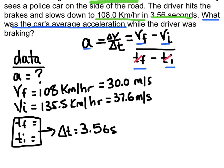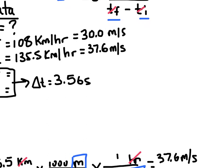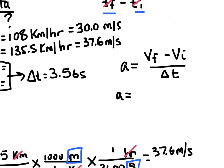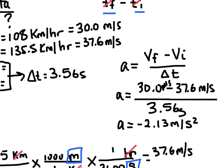Rewriting the equation: acceleration equals V-final minus V-initial, over delta T. Plugging in: V-final is 30 m/s, V-initial is 37.6 m/s, over a time of 3.56 seconds. When I do the math, acceleration equals negative 2.13 meters per second squared.